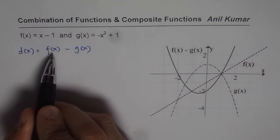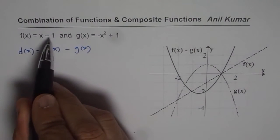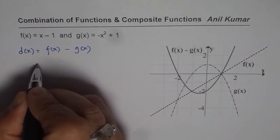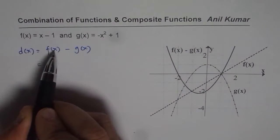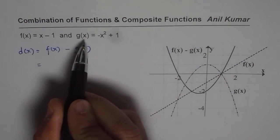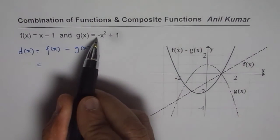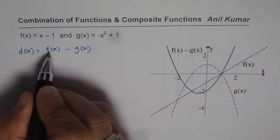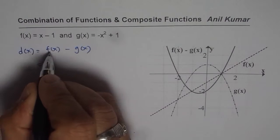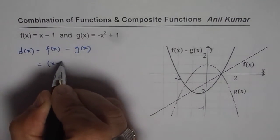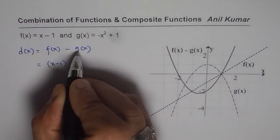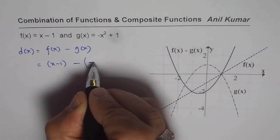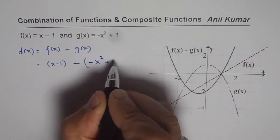I am going to find the difference using the functions themselves. Now here what we have is, f of x is x minus 1 and g of x is x square with negative sign plus 1. So we can substitute these values here. So we get x minus 1 for f of x minus of g of x is minus x square plus 1.